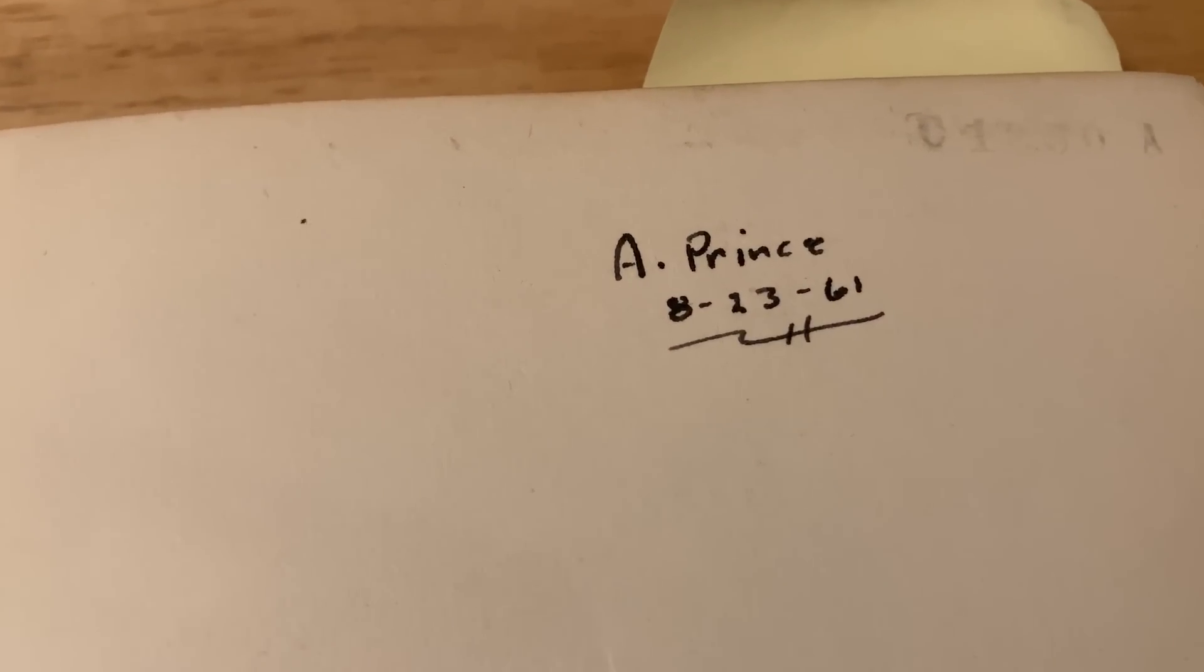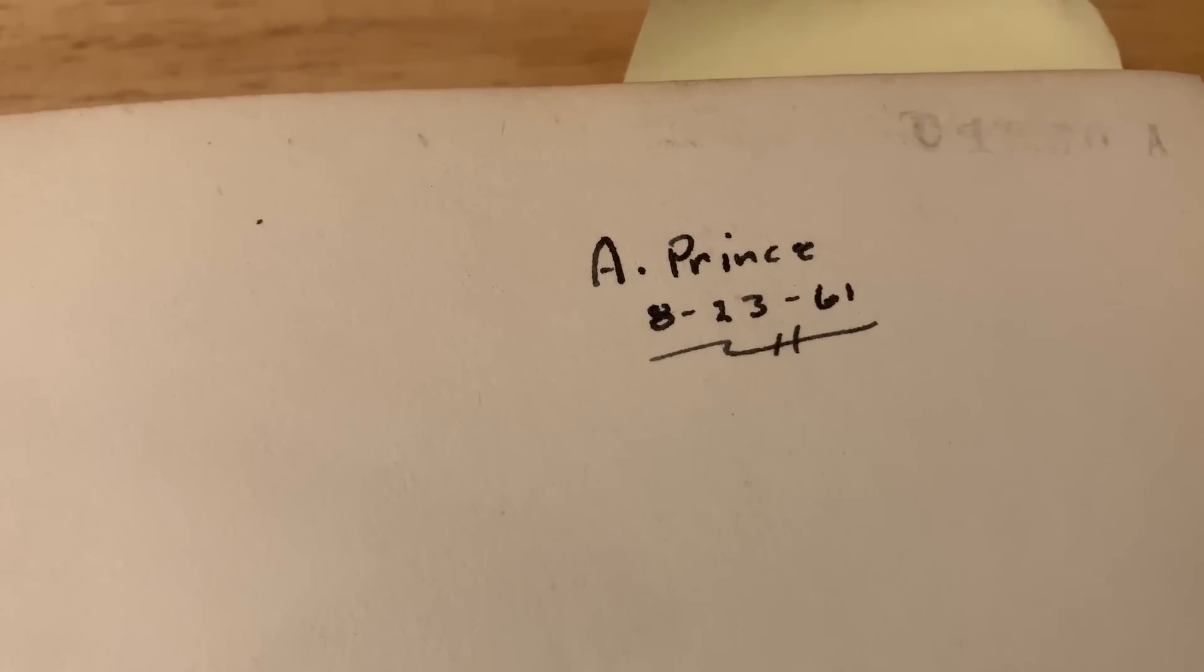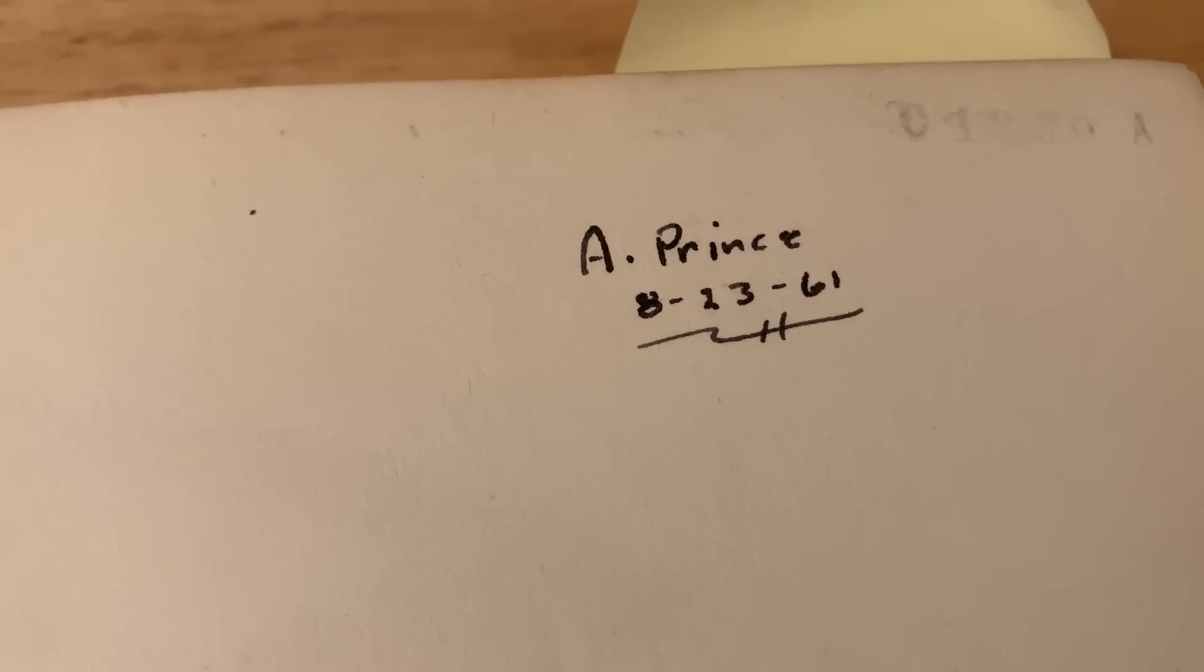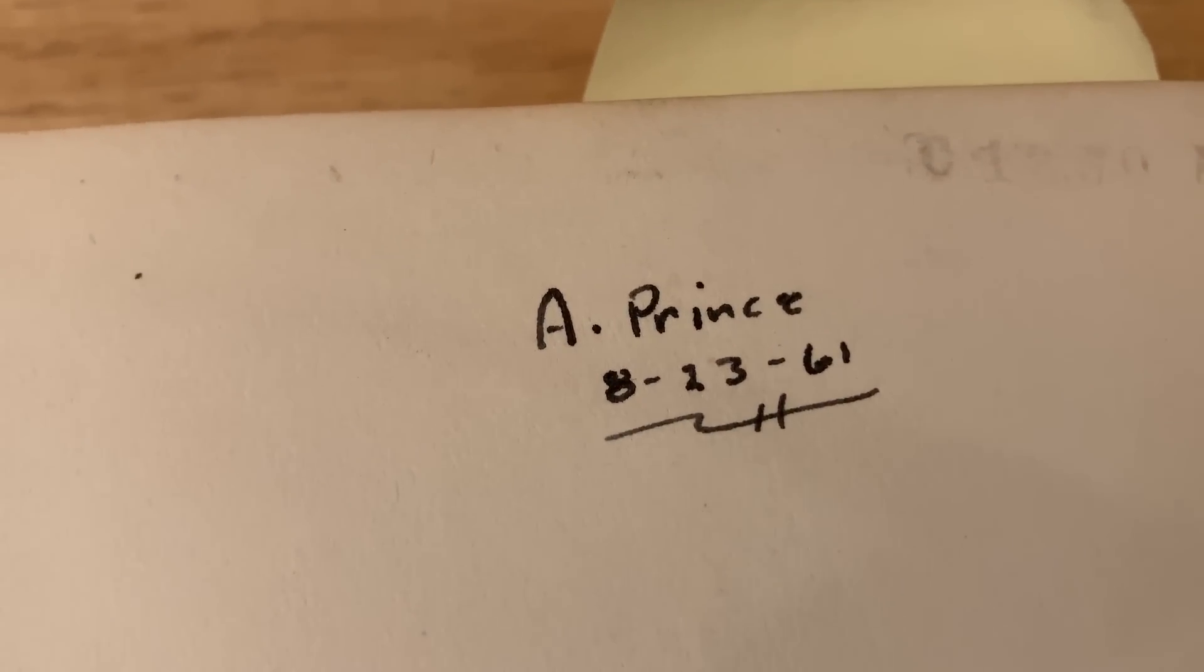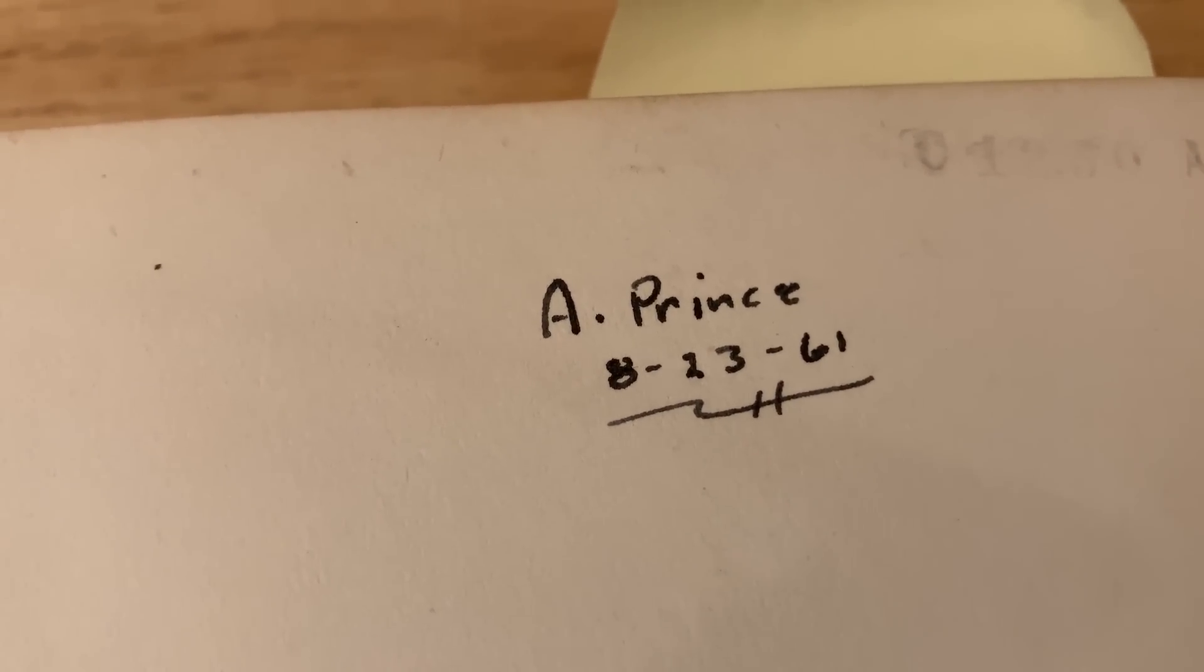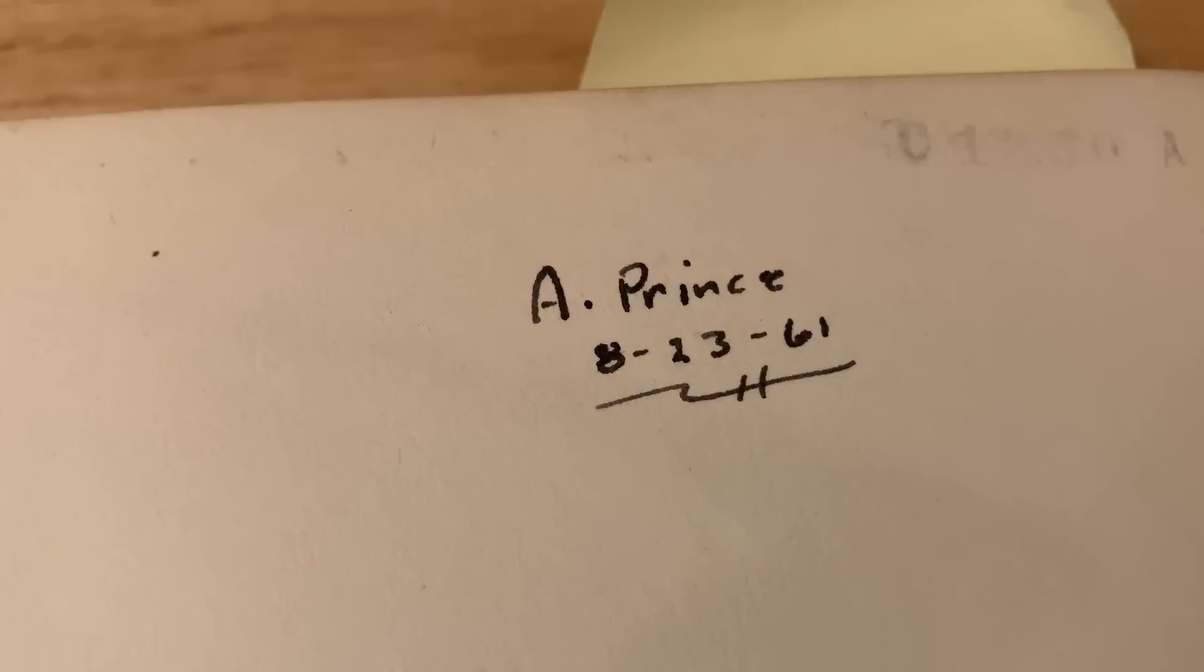You see here, it says A Prince. So Augustus Prince was a nuclear physicist and this was his book from his private collection. Looks like he signed it August 23rd, 1961. That was a long time ago.